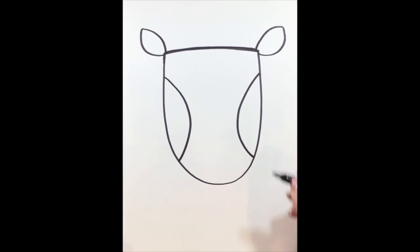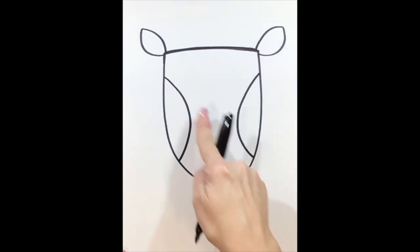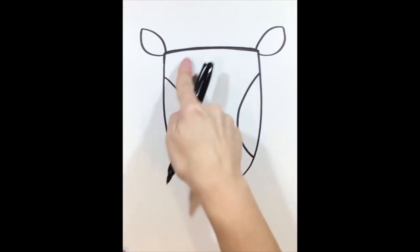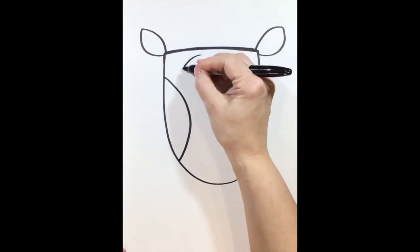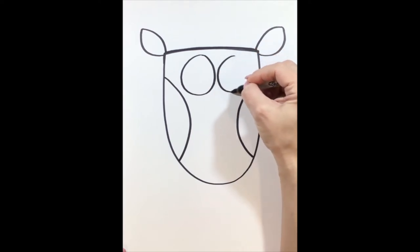The next step is we're going to add the two eyes in the center area of our owl. So it's going to be at the top part of the body, in the center area, and we're going to make two large circles. One circle and two circles.